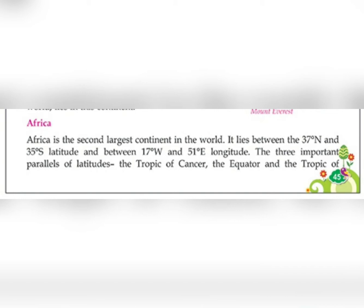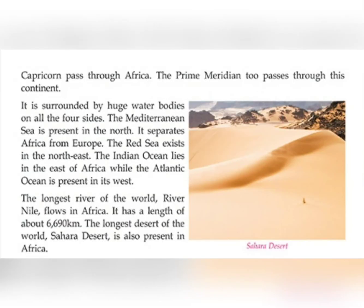मतलब जो Africa है वो हमारा second largest continent है और वो पाया जाता है between 37 degree north और 35 degree south, और west के according। और three important parallels of latitudes हैं इसमें — the Tropic of Cancer, the Equator, और Tropic of Capricorn pass through Africa। यह Africa से होते हुए जाते हैं तीनों।